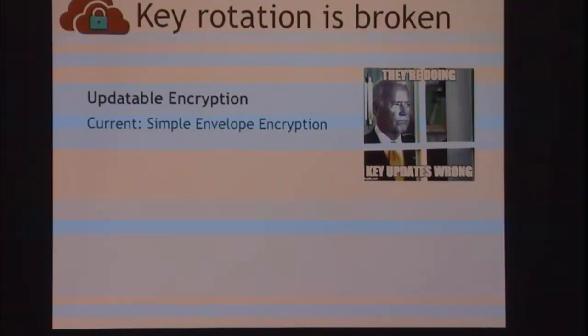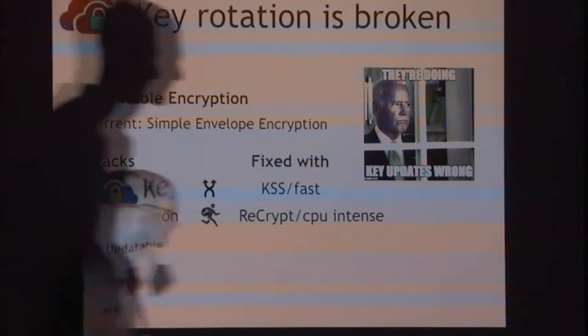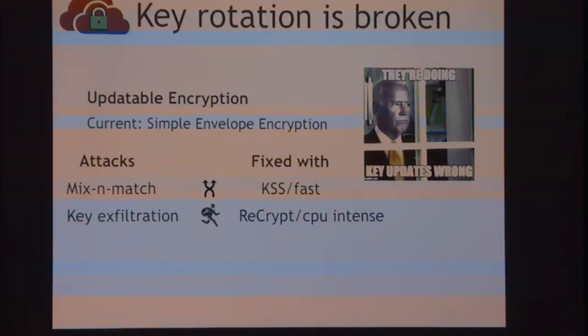What I want to talk about today is key rotation, and I claim key rotation is broken. I'm going to introduce updatable encryption and talk about the obvious way to use it — a technique I'll call simple envelope encryption. We're pretty sure this is the same technique everybody's actually using right now. I'll show attacks against this technique under two different threat models: first, a mix-and-match attack, and then show how to fix it with a new scheme called KISS, which is high performance. Then I'll escalate to a higher threat model and show another attack called a key exfiltration attack, which breaks all the simple schemes. I'll show a new encryption scheme that solves that model, but there will be some performance costs.